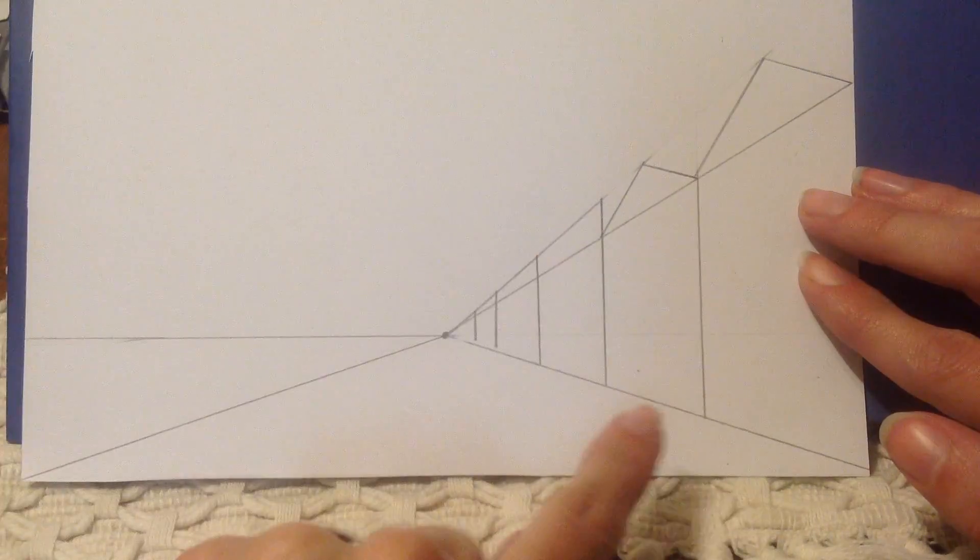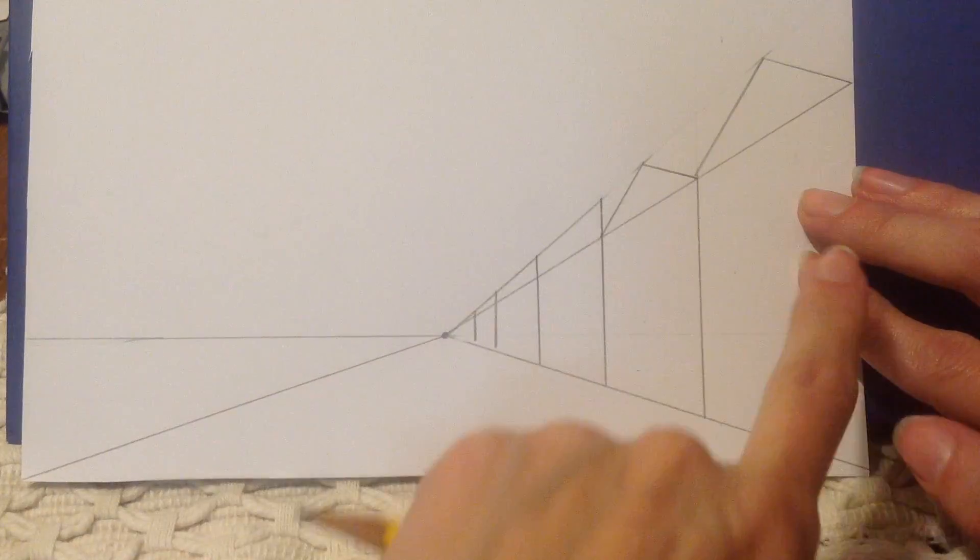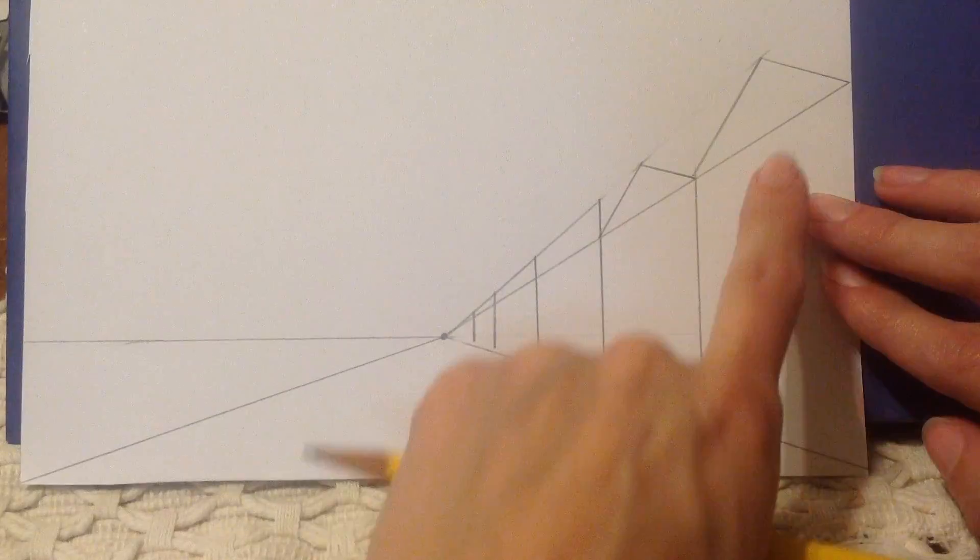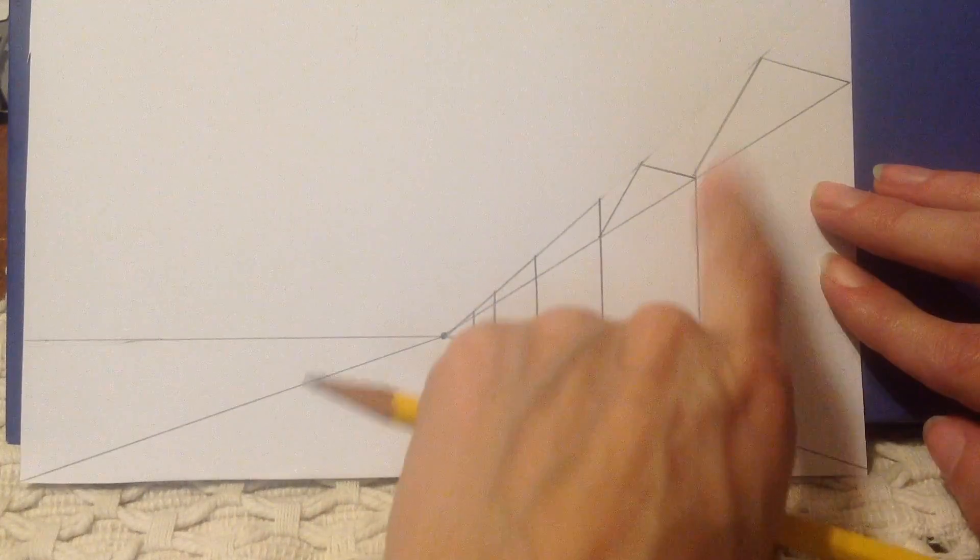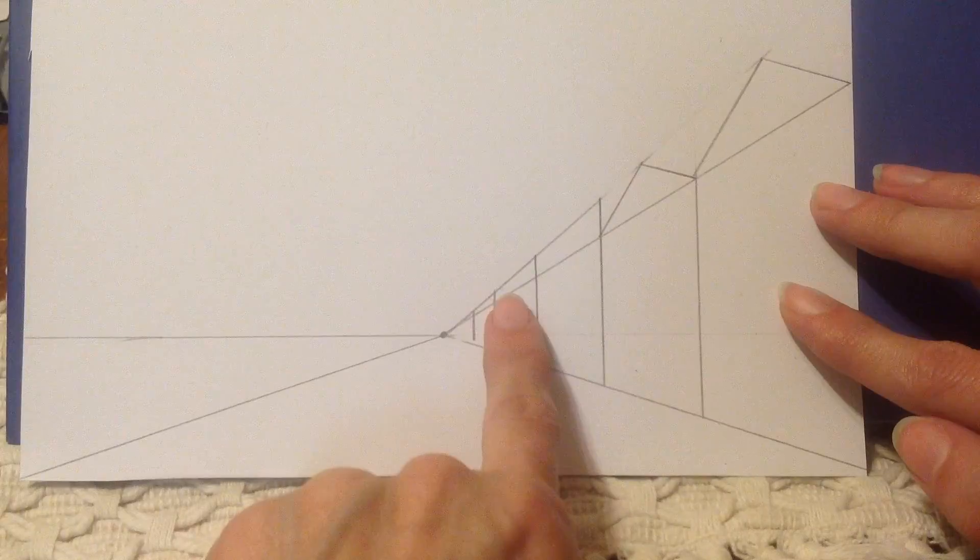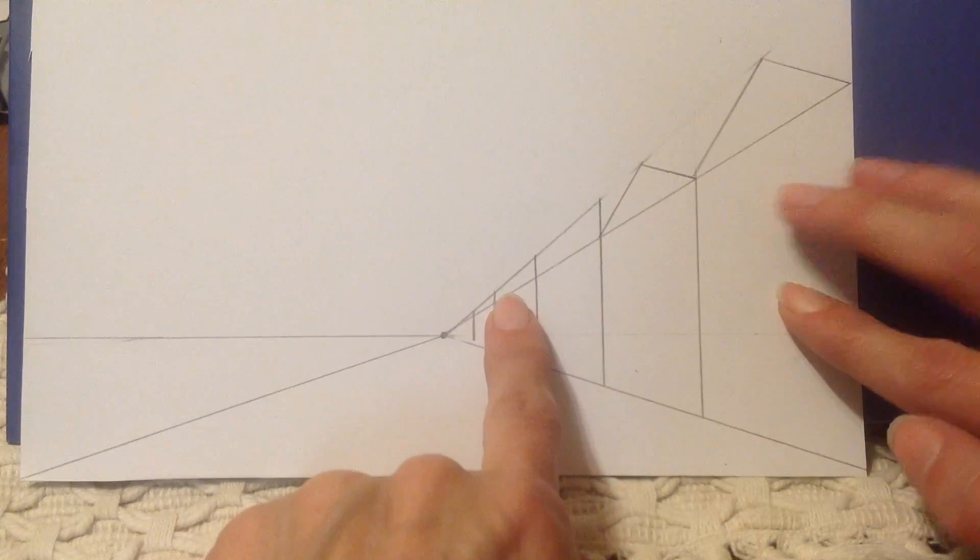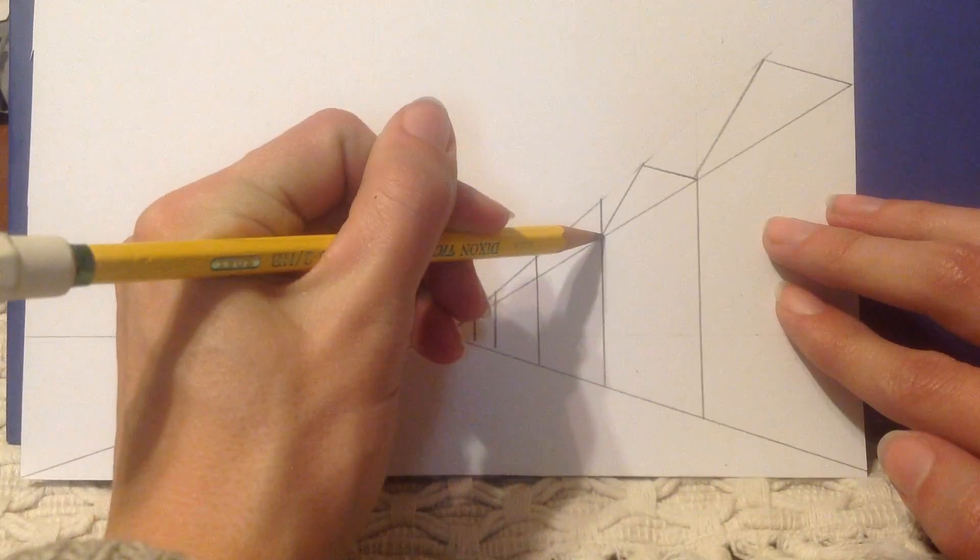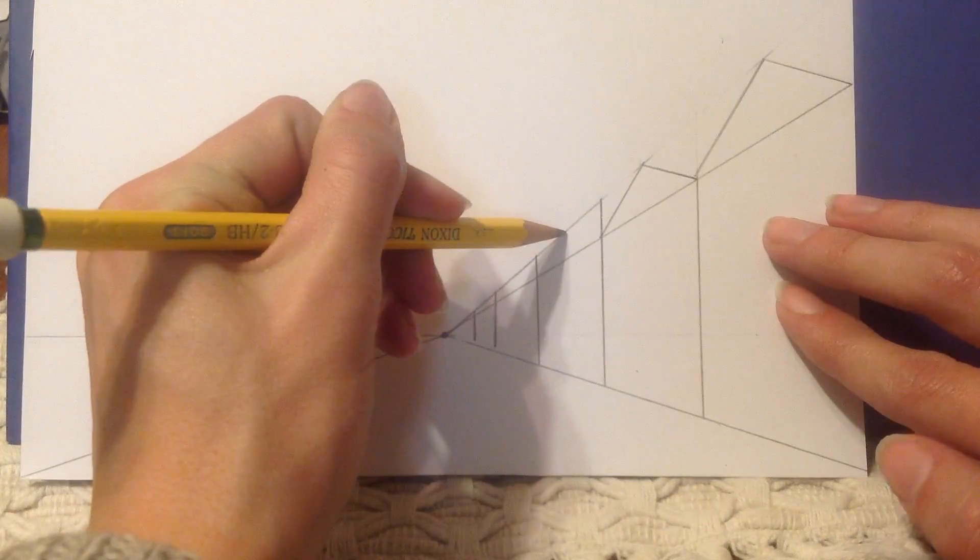We now have our road and we have two houses, each one with the front of the house and the roof. So the other houses will be done the same way and I'll show you how it works again. So I'm going to start from here and draw to here.